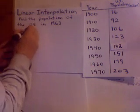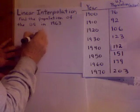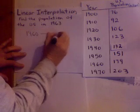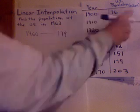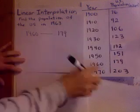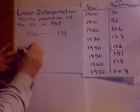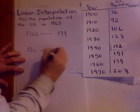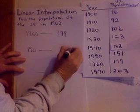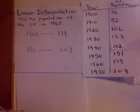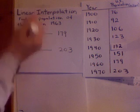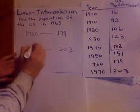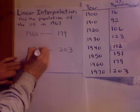And it would be between 1960, which the population is 179 million. Remember, it is millions. And 1970, the population is 203. Those are the two dates that I'm trying to find. The population of 1963 is between there. 1970 here.